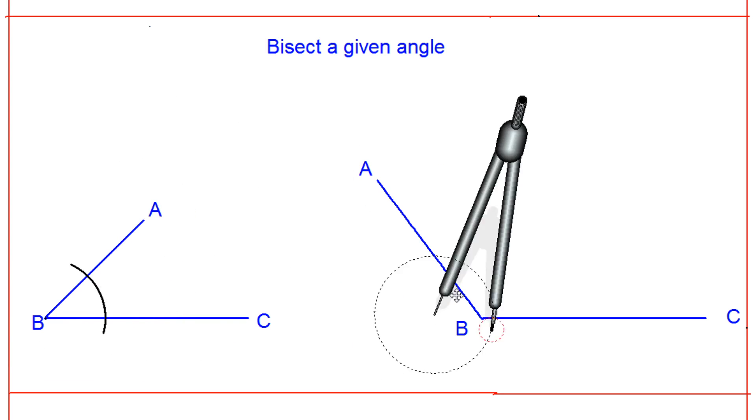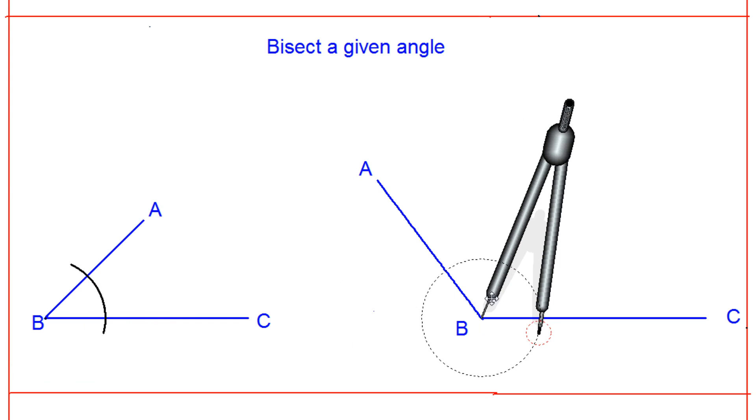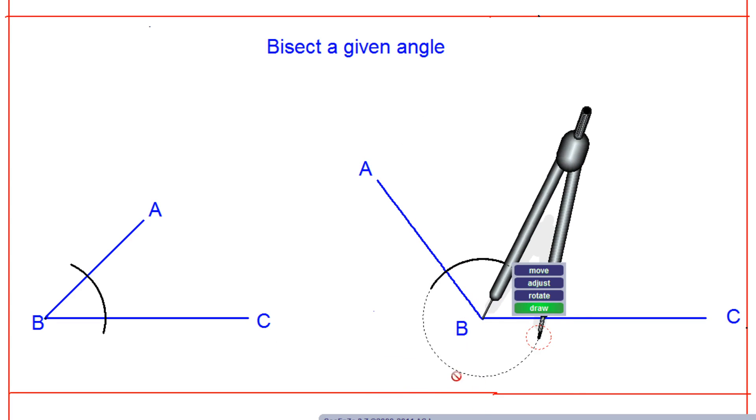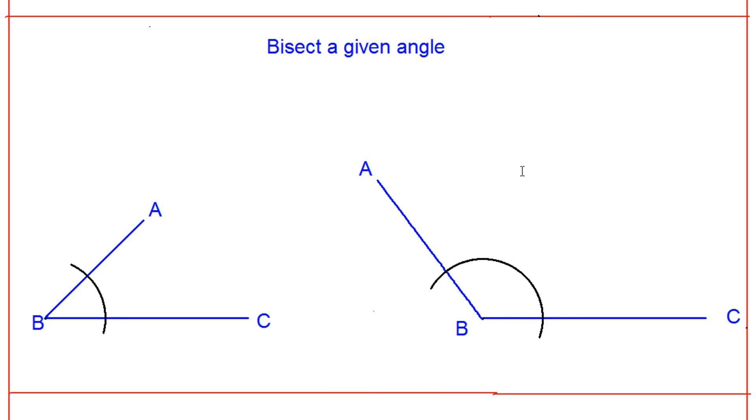You can give some name - say I will give it DNA. Same thing I will do for this one also, the obtuse angle. So here also I will draw the arc, maybe with the same radius or a different one, it doesn't matter. I'll draw the arc.